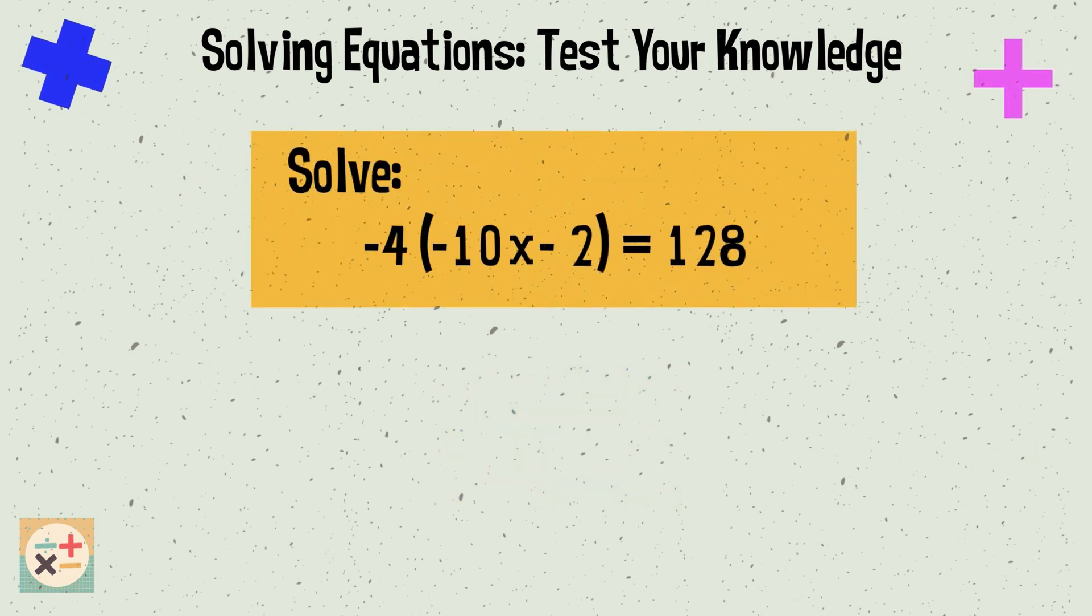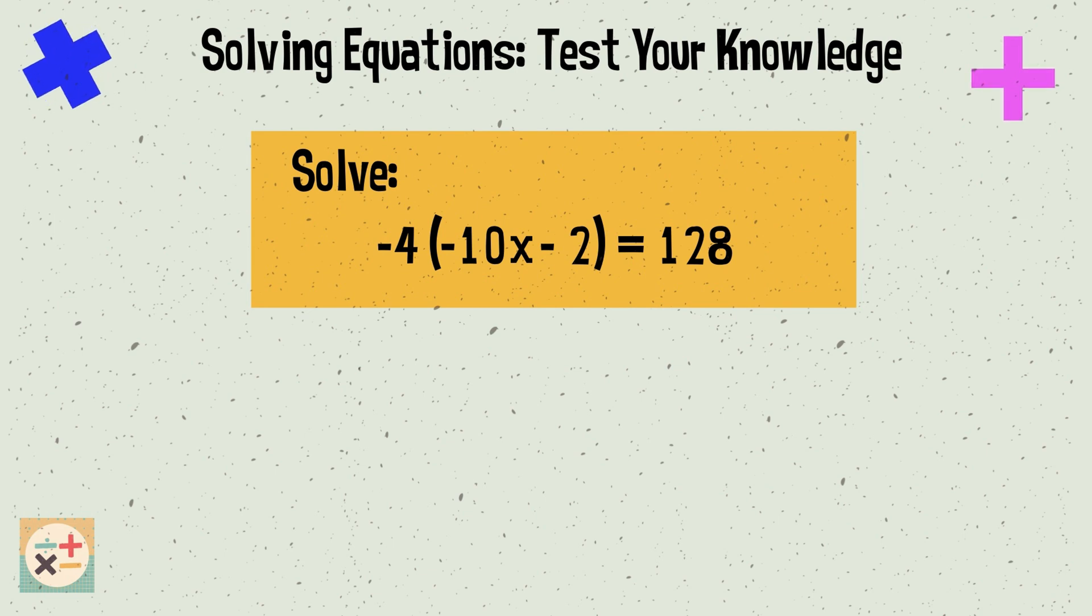Question 4. Solve minus 4 multiplied by minus 10x minus 2 equals 128. x equals 3.